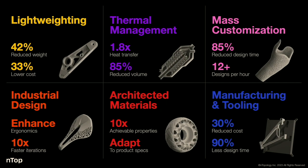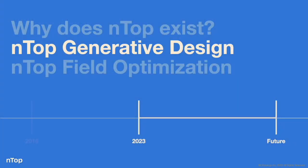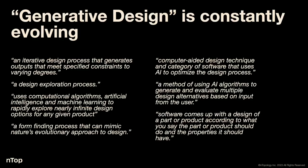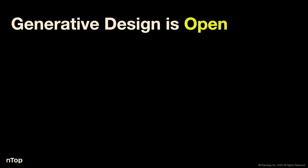Before talking about field optimization, I want to contextualize why we're talking about fields in the first place by discussing generative design. I like to Google the definition of generative design before presentations — the Wikipedia definition has changed dramatically over the past five years. What I really want to focus on is the principles of generative design. We believe generative design needs to be open, and this is a foundational principle I'll show later with field optimization: it needs to provide flexible integrations with algorithms.